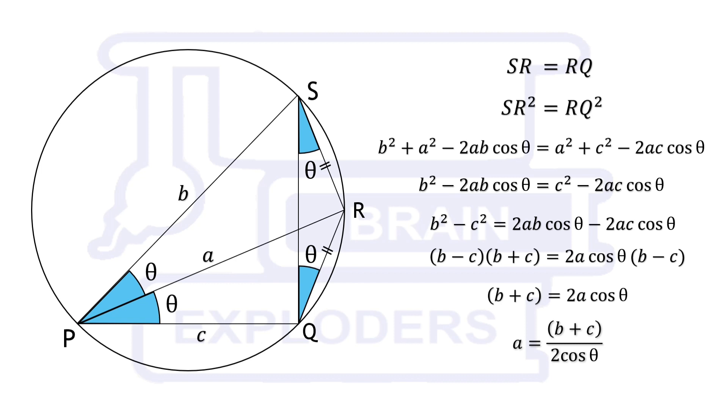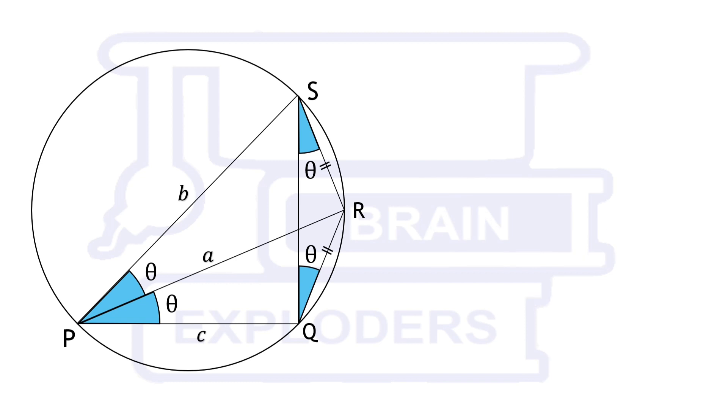Now, area of quadrilateral PQRS is equal to area of triangle PRS plus area of triangle PRQ. We can write area of triangle PRS equals to half ab sin theta and area of triangle PRQ equals to half ac sin theta.